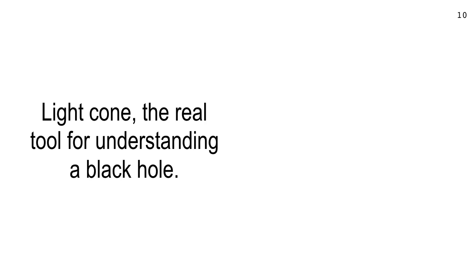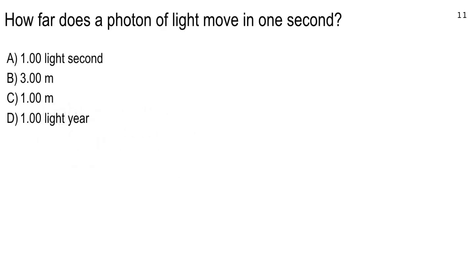Let's do some iClicker questions. How far does a photon of light move in one second? Most of you got it: one light second. That's how far. In a year it goes a light year. And side note: one astronomical unit — how many light seconds? It's 500. Round it off to 500. Don't forget that.